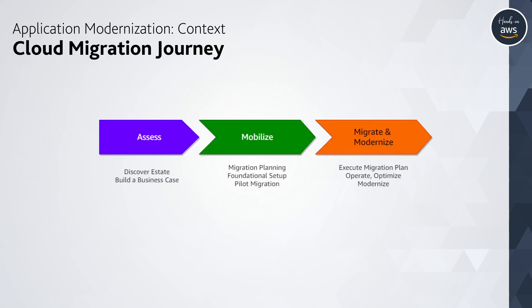When an organization goes through the migration journey, typically from an on-prem or co-located data center to the AWS cloud, it is a fairly large and complex undertaking, with a lot of moving parts and crucial decisions to be taken along the way. It helps to break it down into broad phases. The AWS migration methodology recommends that we look at it as these three phases: start with Assess, then Mobilize, and the last phase, Migrate and Modernize.